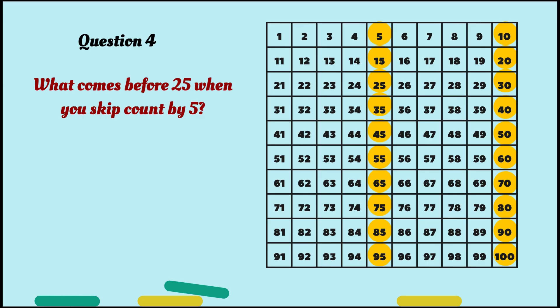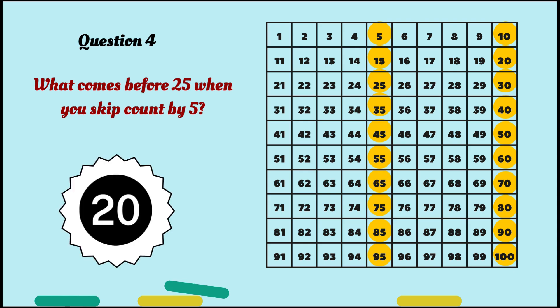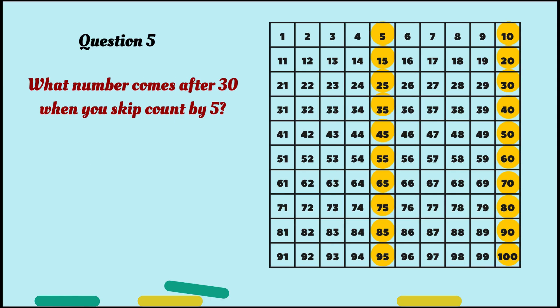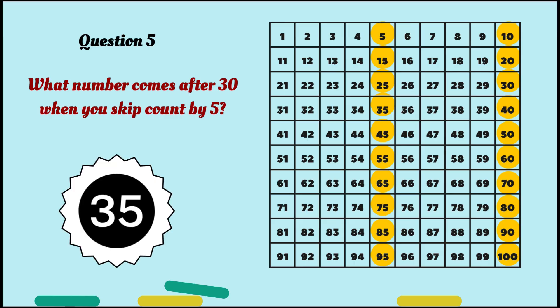What number comes before twenty-five when you skip count by five? In this question, instead of going forward, we need to step a little bit back, because it says before. Got it? Yes, the answer is twenty. I'll just recap for you — five, ten, fifteen, twenty, twenty-five. So twenty comes right before twenty-five in the five times table. Next question: What number comes after thirty when you skip count by fives? Yes, it's thirty-five.